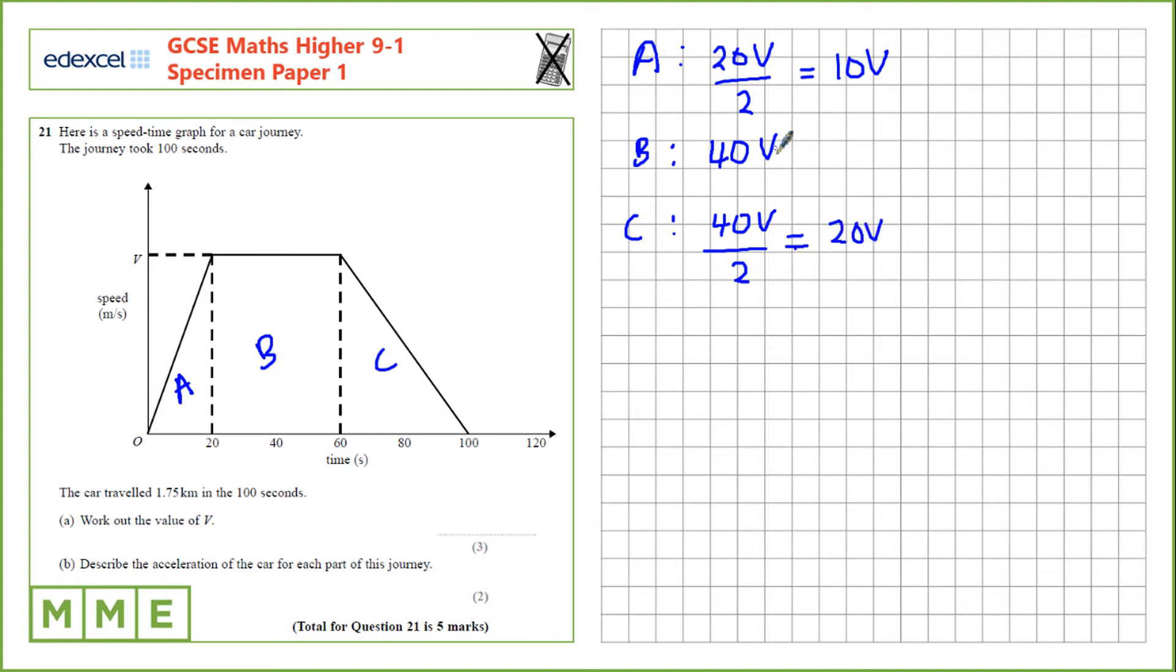So in total, we have 10V, 40V, and 20V. And 70V equals 1.75km. But we want the speed in metres per second. So let's convert this to metres, 1,750 metres.